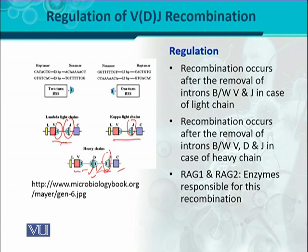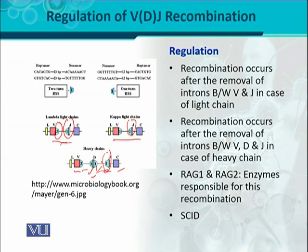V, D, J, and ultimately C are joined together in different combinations. The role of RAG1 and RAG2 enzymes responsible for recombination is very important, because in B cells, the different diversity of immunoglobulins is determined as a result of this recombination. If an individual has a deficiency of RAG1 and RAG2 enzymes, there would be an abnormal disease condition called SCID.